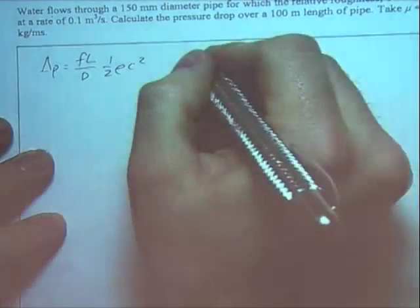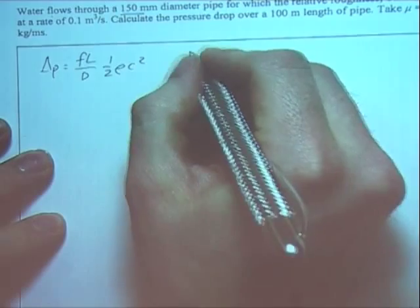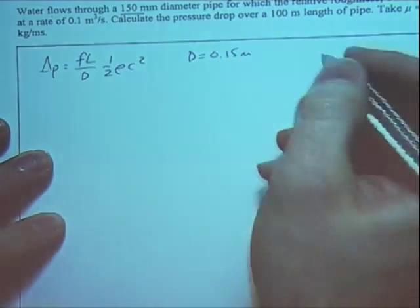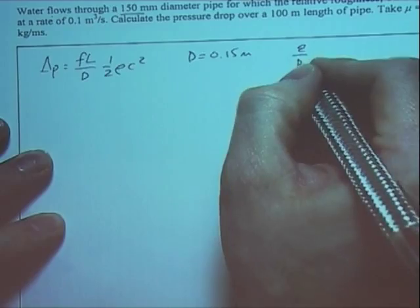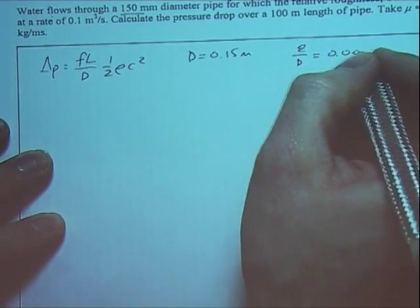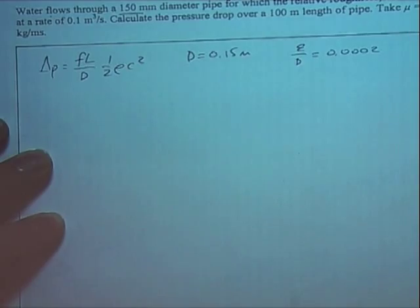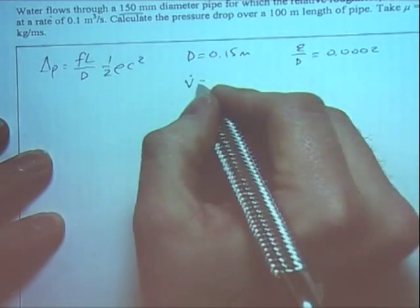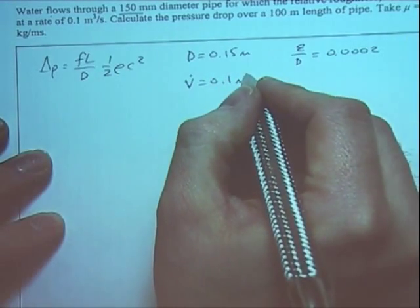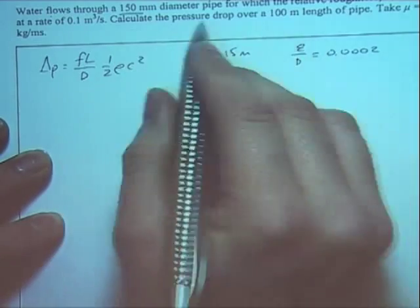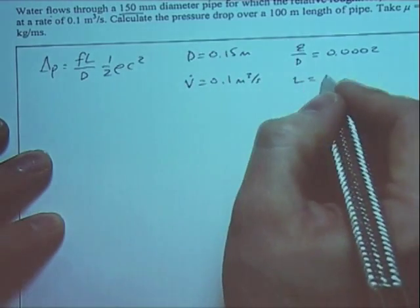We know the diameter. The diameter is 0.15 meters. We've got the relative roughness, epsilon upon d is 0.0002. We've been given V dot, that's 0.1 meters cube per second. And we know the length, L, is 100 meters.